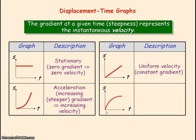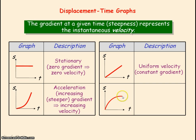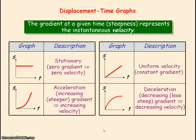And for this final graph, we look at the gradient. The steepness is getting less steep, so the gradient is decreasing as time is increasing. So if the gradient is decreasing, velocity is decreasing — we're getting a deceleration.